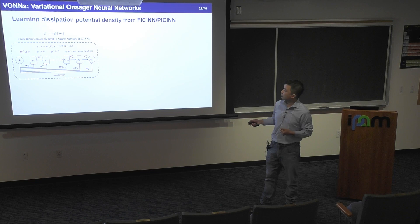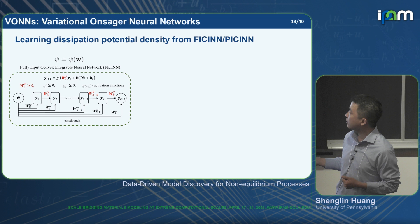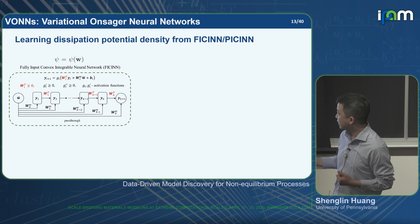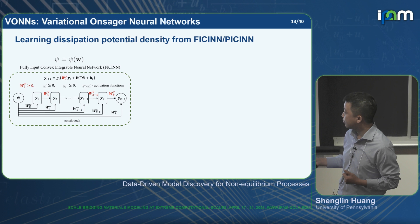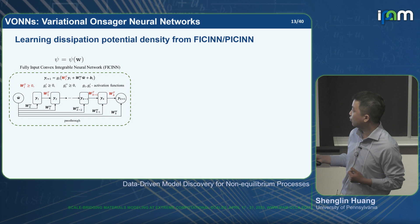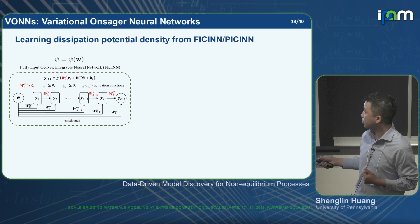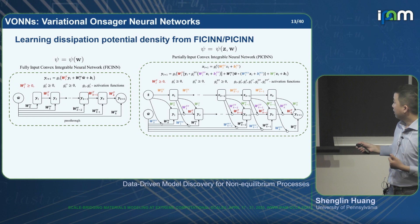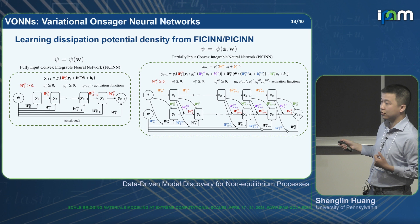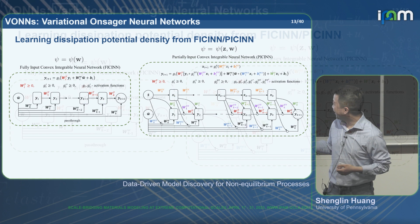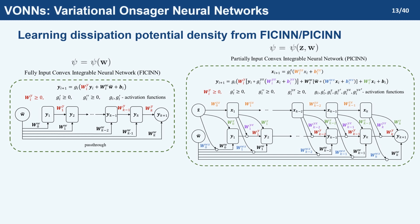For the dissipation potential the structure is more complicated. For the simple case where the dissipation potential is only a function of the process variable w and convex on w, we use a feedforward network with pass-through layers between the input and each layer, with non-negative weights and a convex non-decreasing activation. For the more general case where the potential is a function of both z and w but only convex on w, we have a more complex structure with interactions between the upper and lower parts, using softplus as it is both convex and non-decreasing.